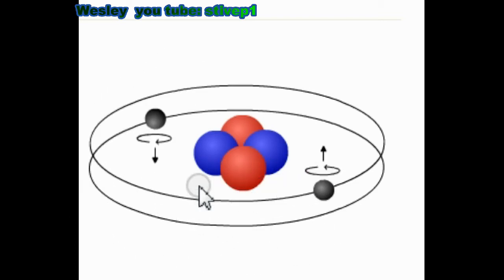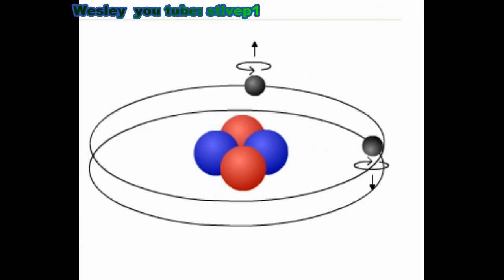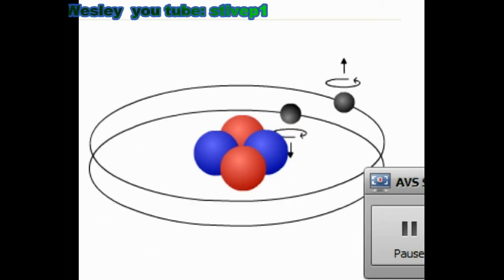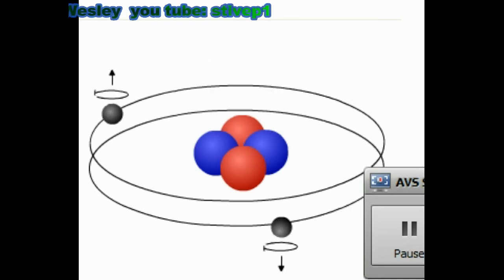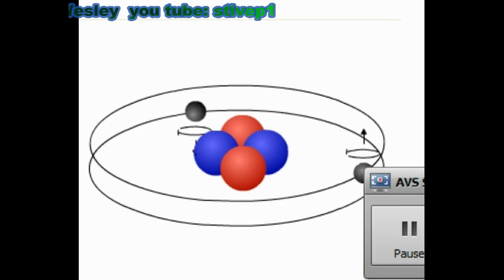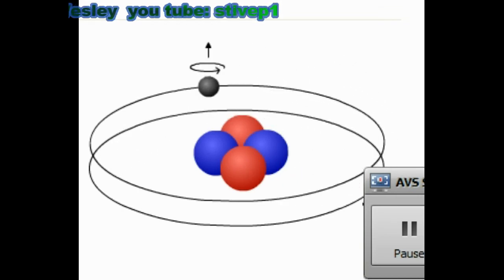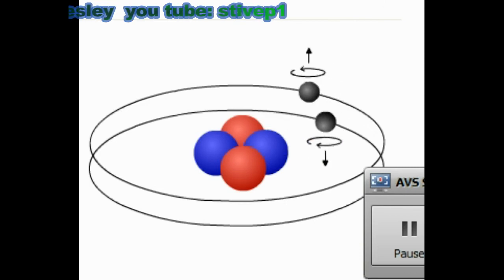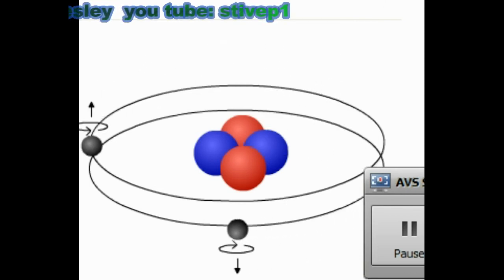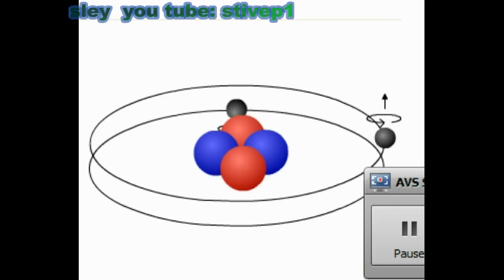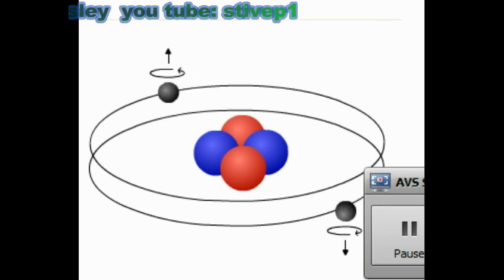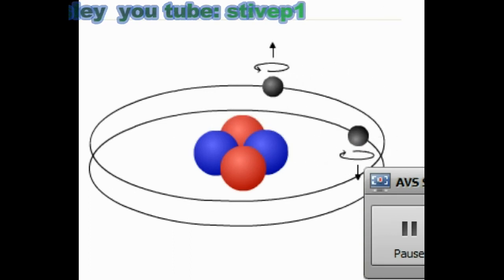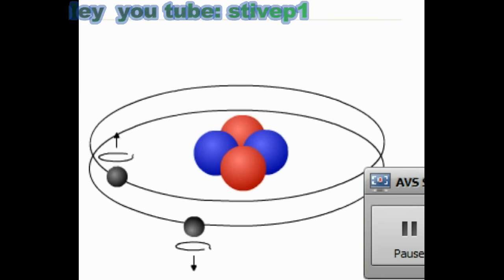Most materials can be classified as diamagnetic, paramagnetic, or ferromagnetic. Diamagnetic materials have weak, negative susceptibility to magnetic fields — they are slightly repelled by a magnetic field and will not retain magnetic properties when the magnet is removed. In those materials, electrons are paired so there is no permanent magnetic moment per atom; their magnetic properties arise from the realignment of electron paths under the influence of an external magnetic field.